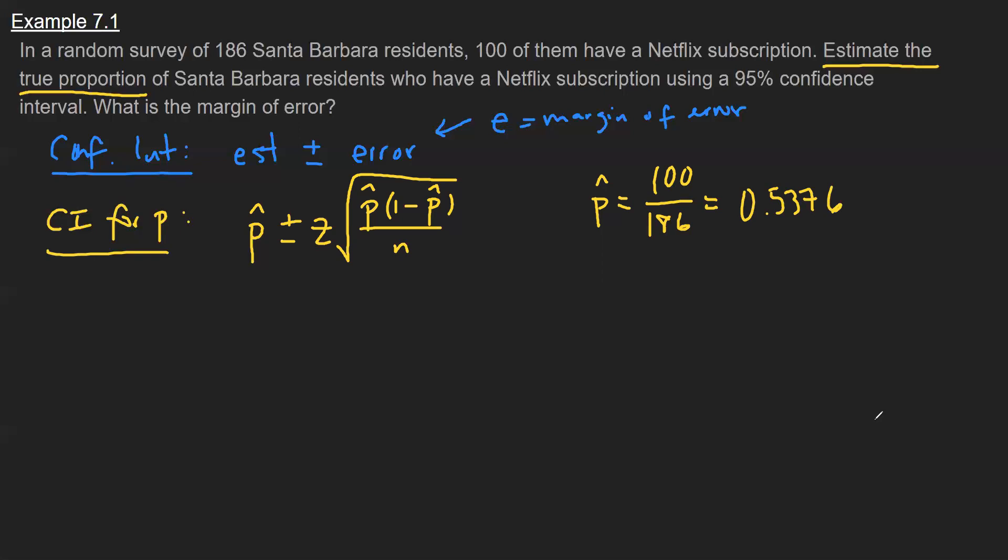Now, all I have to do is just plug this into my formula. So I'll follow suit here, 100 over 186. Now, the Z is a Z-score corresponding to the appropriate confidence level. So at 95%, you can look on the table and you see this is 1.96. And then I'm just going to fill in the rest of this formula here.